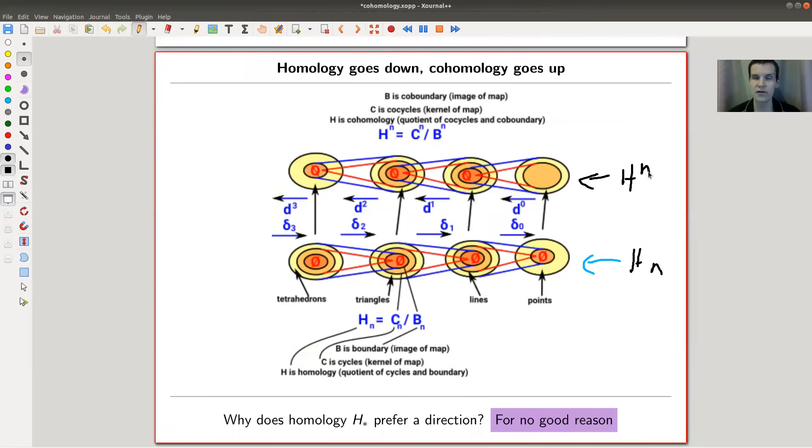So homology kind of starts with something high dimensional and looks at boundaries and boundaries and boundaries. So it would start with something like a tetrahedron and look at the triangle boundaries of a tetrahedron. And then it would look at the line boundaries of the triangles and then look at the point boundaries of the lines.